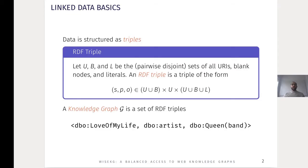Web knowledge graphs are usually published on the web in an RDF triple format, where each triple consists of subject, predicate, and object. So basically, knowledge graphs can be represented as a set of RDF triples. Here we have an example of a triple where the album Love of My Life is created by the Queen's Band.